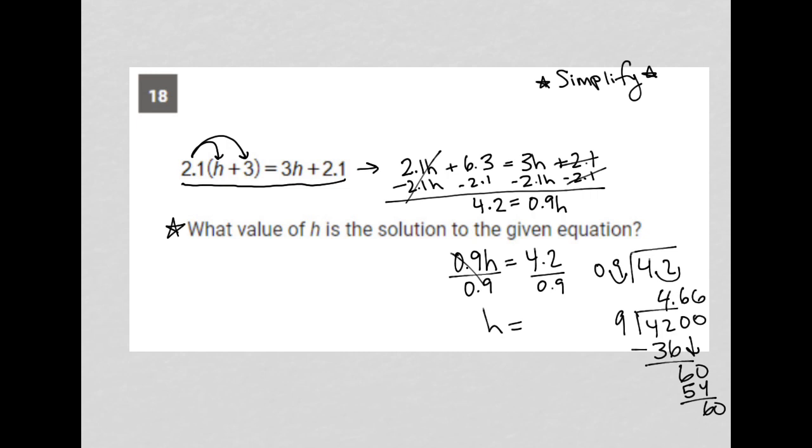So our answer here is 4.67. 7 should work for rounding. Should also be okay saying 4.66 as well. I'd probably go here with the rounded answer, but this should also fit as well.